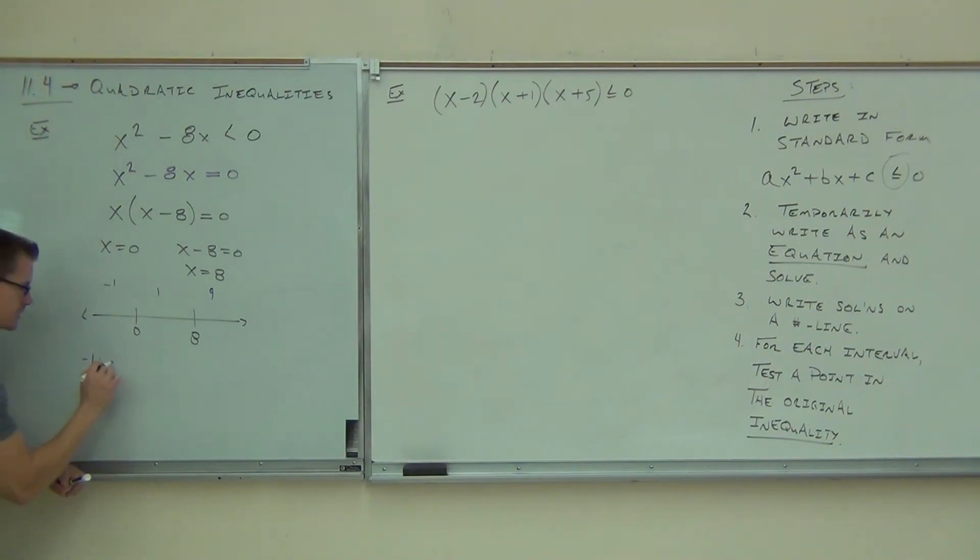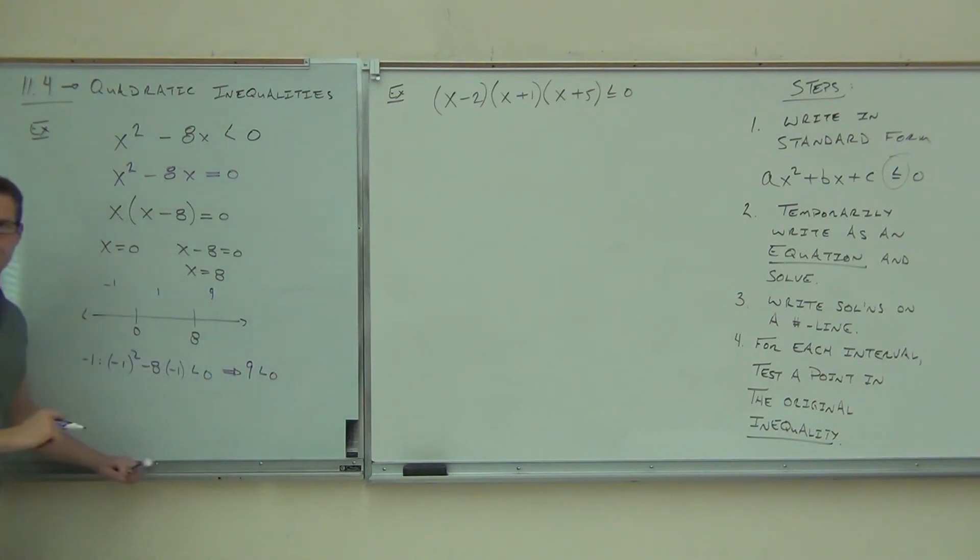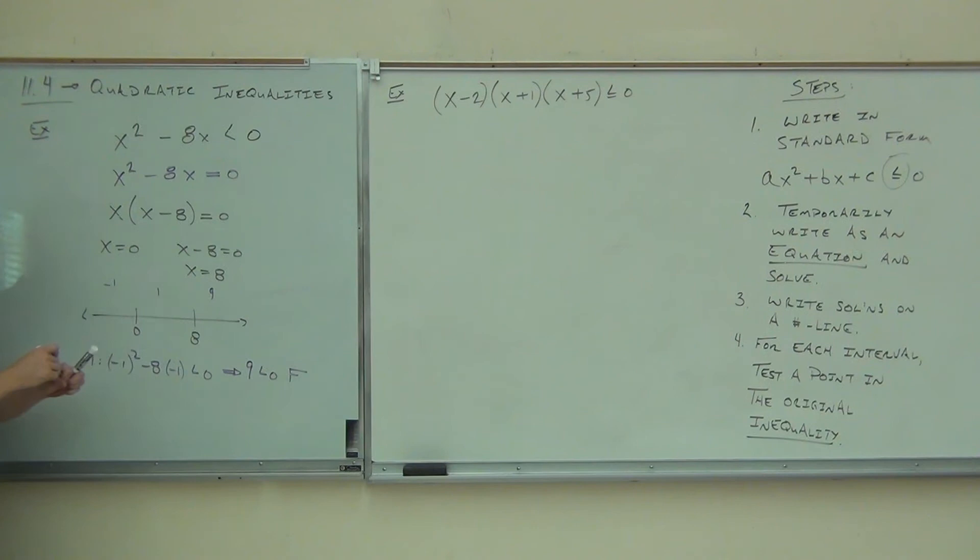If you check negative one, you get negative one squared minus 8 times negative one, less than zero. That all gives you nine. True or false? False. Definitely a false statement. Nine is not less than zero. Hey, what should that be? True. What should that be? False. It should alternate.